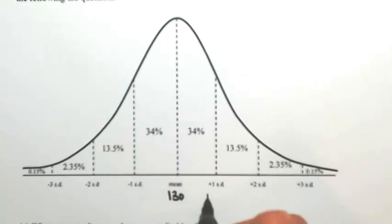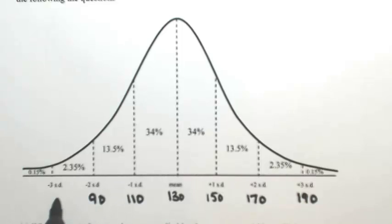So we're going to add one standard deviation, so that's 150. Another standard deviation is 170, and then three standard deviations would be 190. As we move towards the left, we're going to take away 20. So at 130, we have 110, then 90, and then 70.